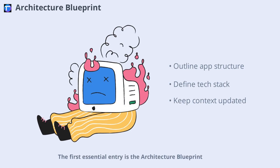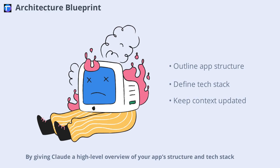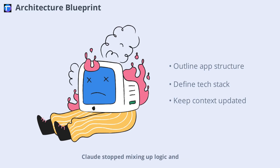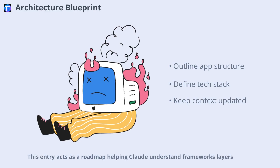The first essential entry is the Architecture Blueprint. By giving Claude a high-level overview of your app structure and tech stack, you ensure it always codes with the big picture in mind. For example, when I defined the separation between my React front end and Express back end in Claude.md, Claude stopped mixing up logic and started placing modules exactly where they belonged.